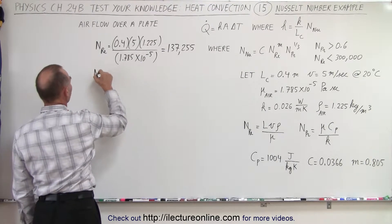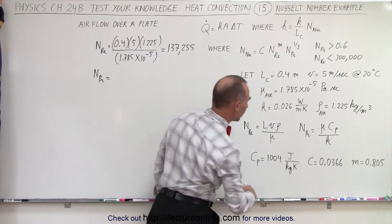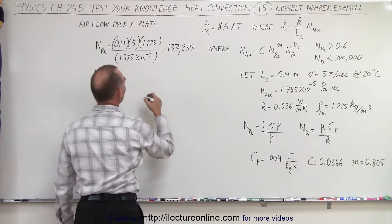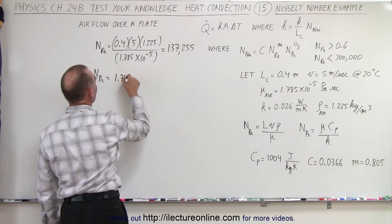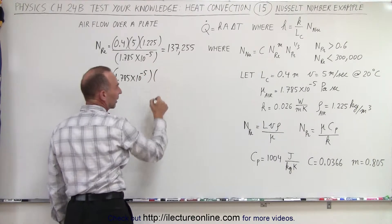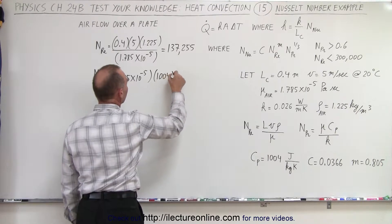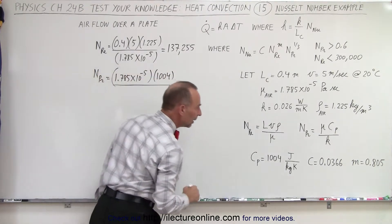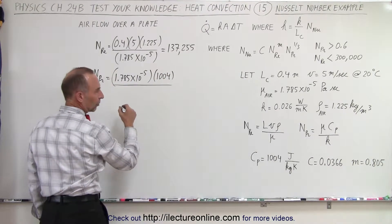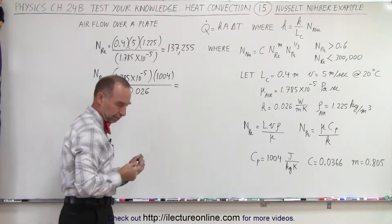How about the Prandtl number? That will be equal to the coefficient, which is 1.785 times 10 to the minus 5. Multiply that times C sub P, which is 1,004, all divided by K, which is 0.026.